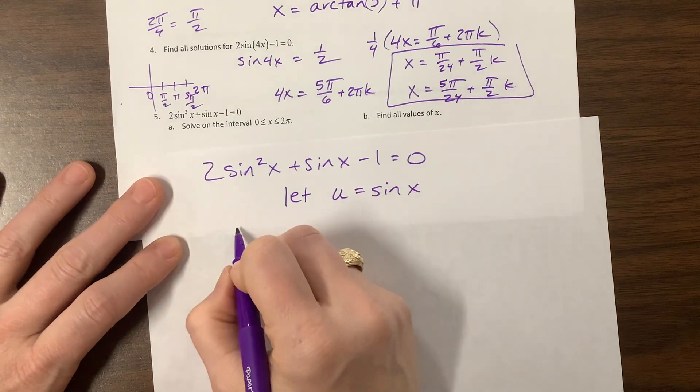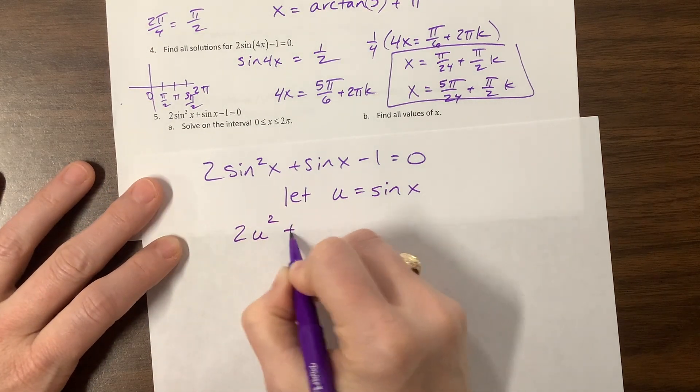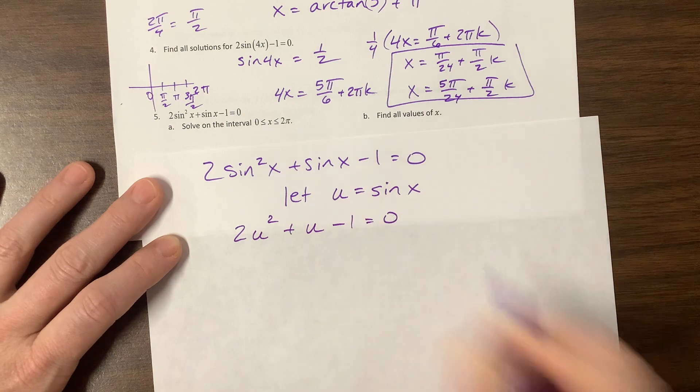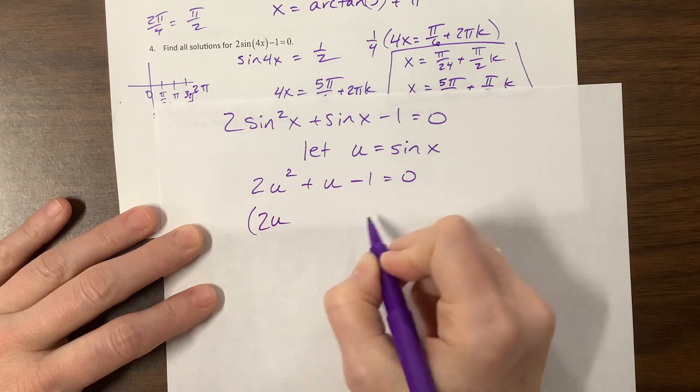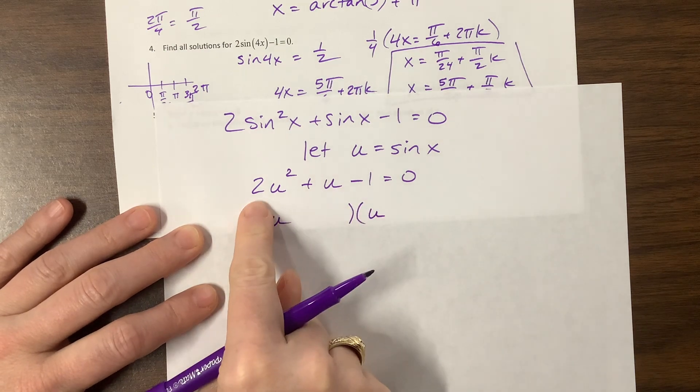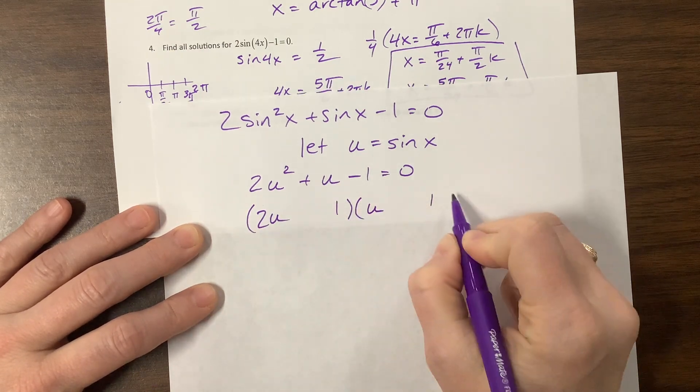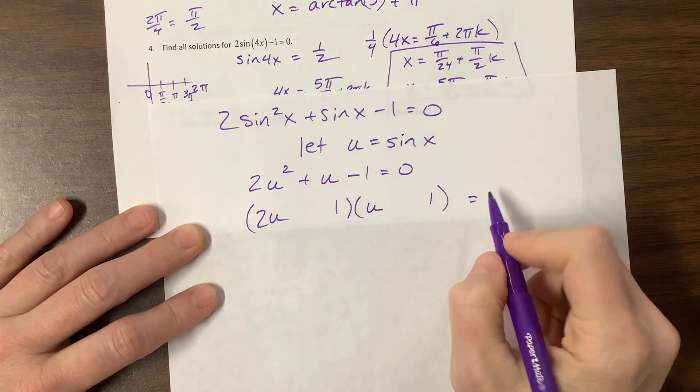Now I can rewrite this problem as 2u squared plus u minus 1 equals 0. This is something I may be more comfortable with factoring. I have 2u and u multiplied to give me 2u squared. I have 1 and 1 that multiply to give me 1, but it has to be negative 1.